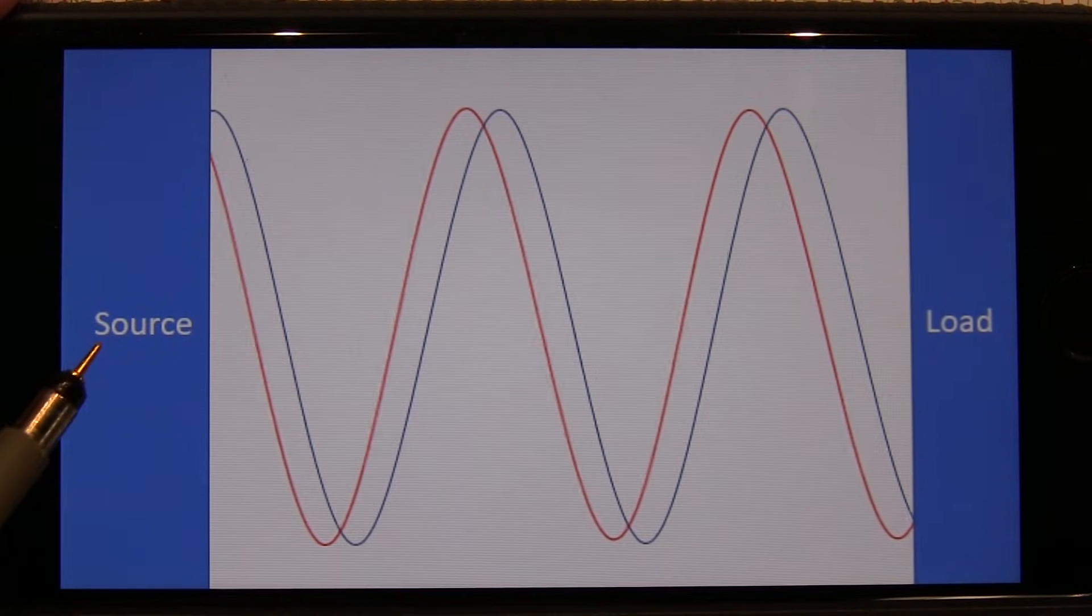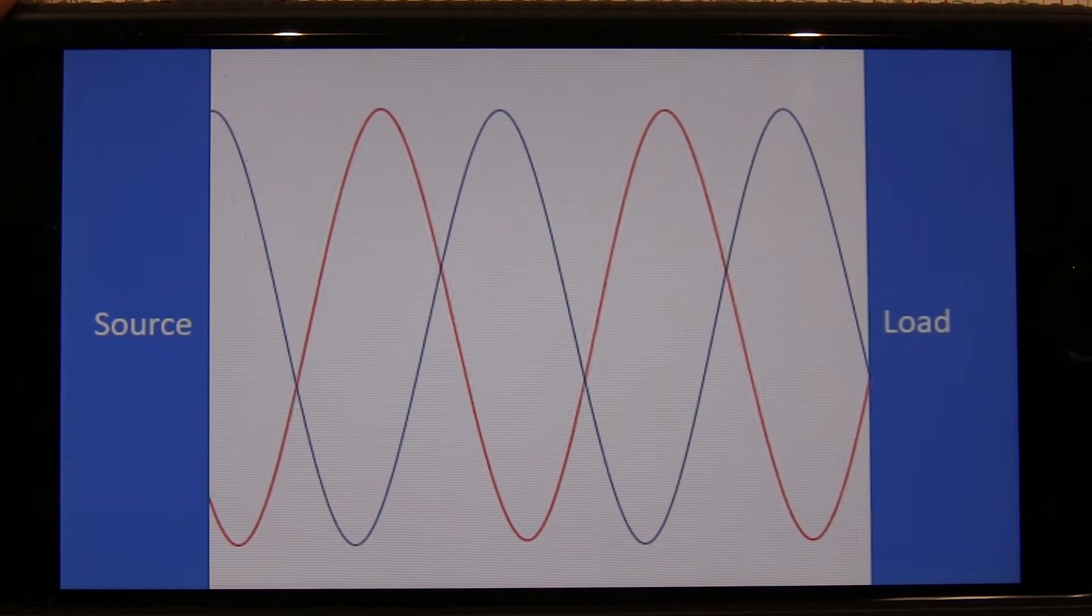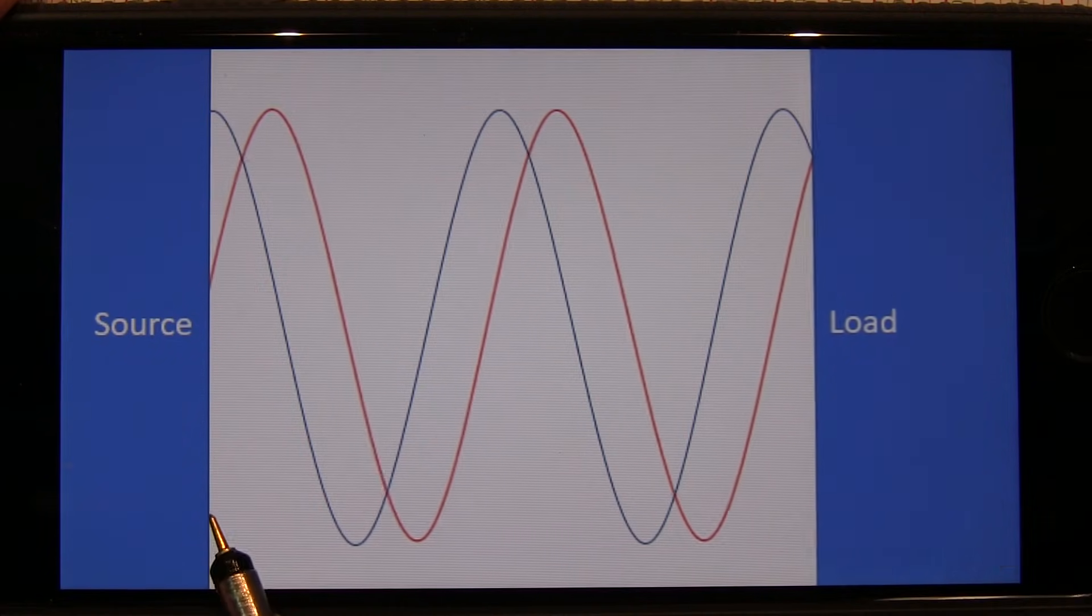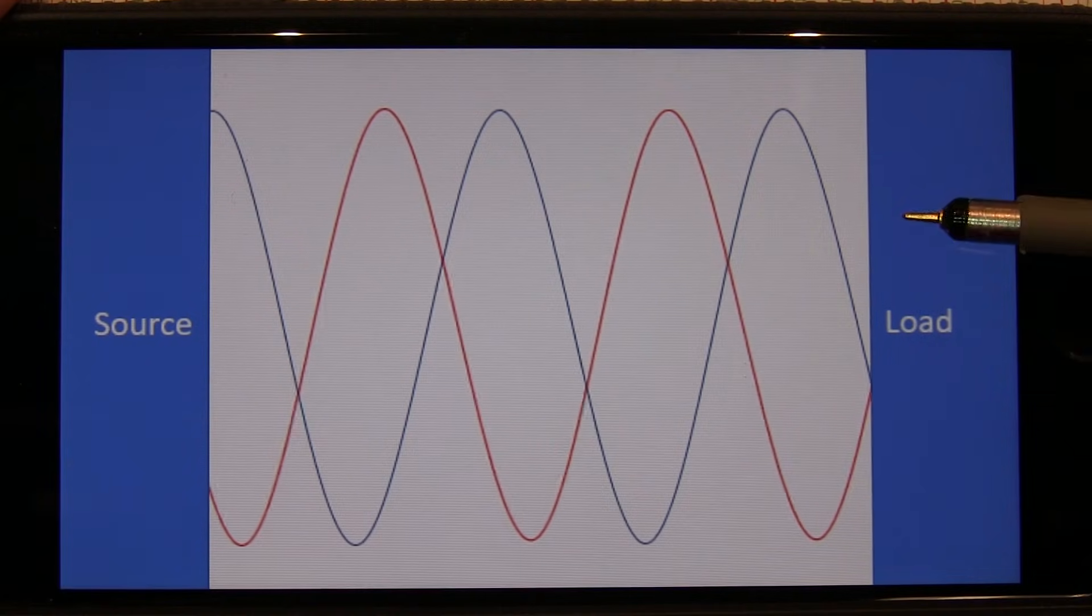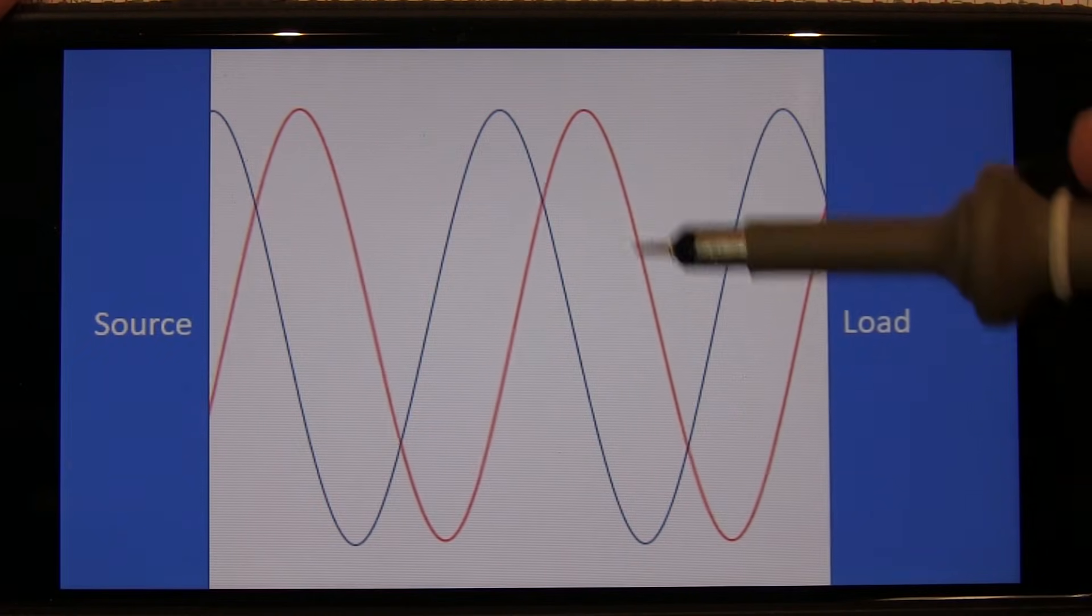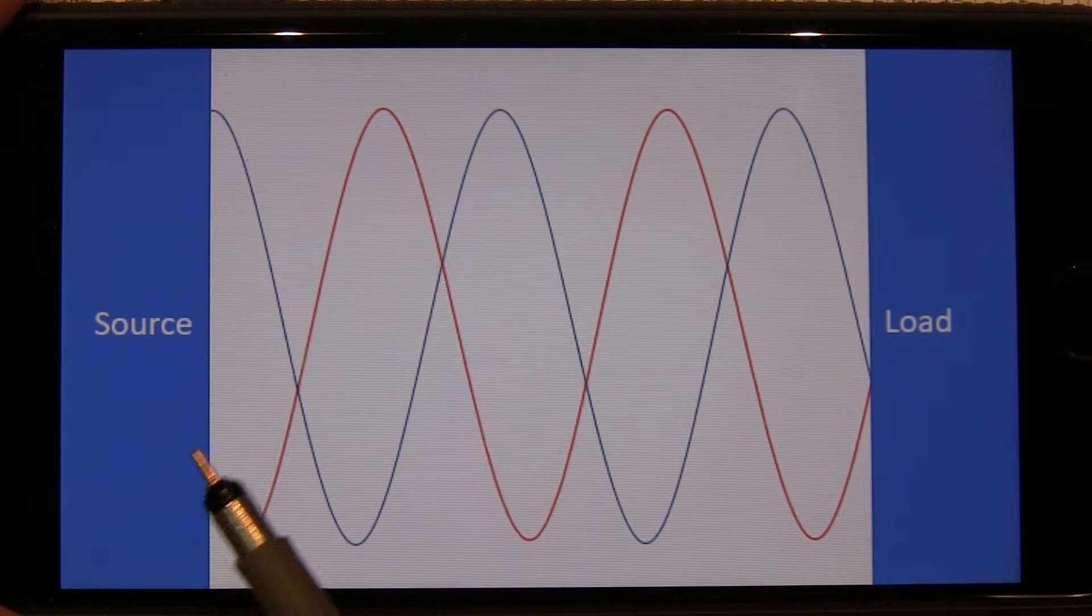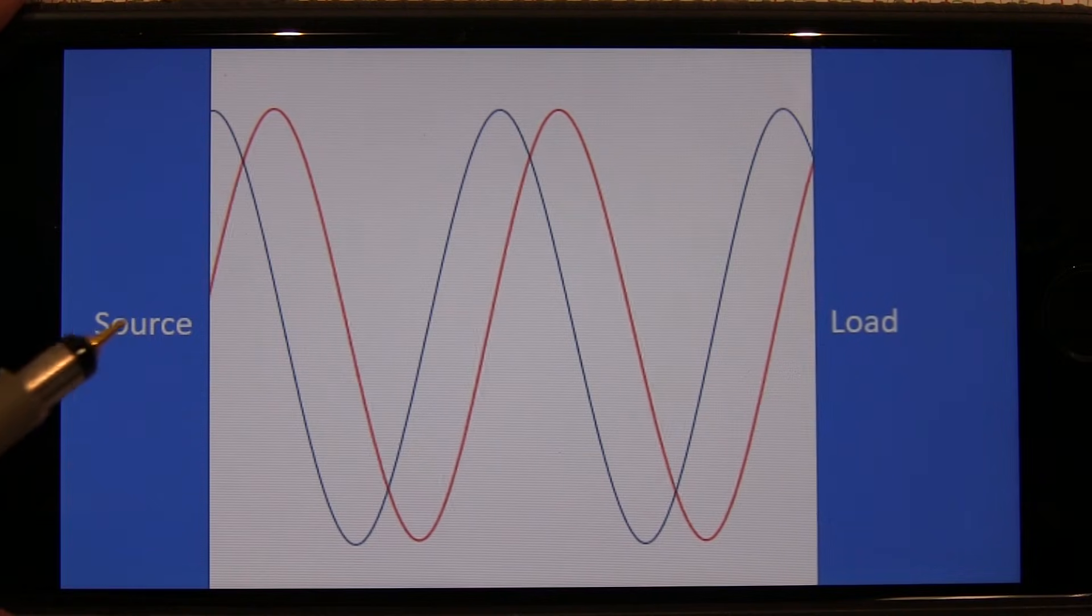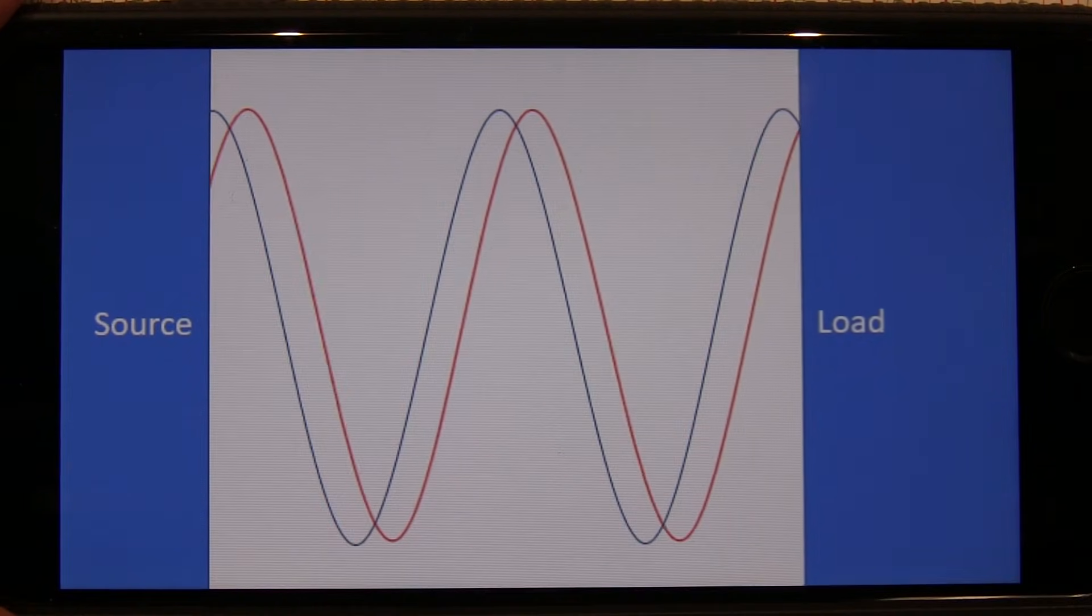Now to illustrate how the impedance looking in from the source to a transmission line varies as the transmission line length varies, I put together this graphic on my phone where the source is indicated here, and the load is the end of the coax. This white area is essentially the length of our coax. This graphic is simulating that the load is an open circuit. So the blue incident waveform coming from the source is being reflected at full amplitude back towards the source.